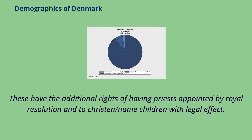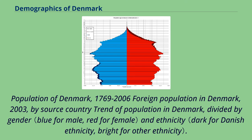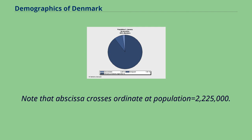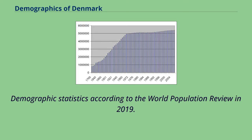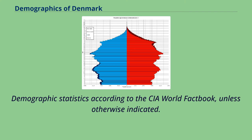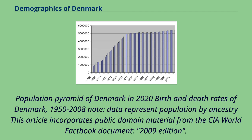Demographic data is illustrated through several charts: population of Denmark from 1769 to 2006, foreign population in Denmark in 2003 by source country, trend of population in Denmark divided by gender and ethnicity, and Denmark's population from 1769 to 2007. Additional demographic statistics are drawn from the World Population Review in 2019 and the CIA World Factbook, including birth and death rates of Denmark from 1950 to 2008.